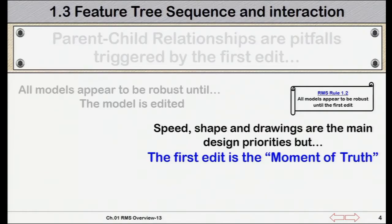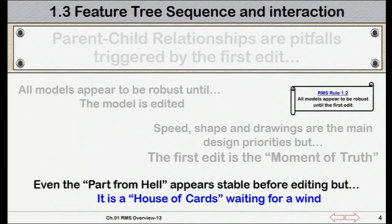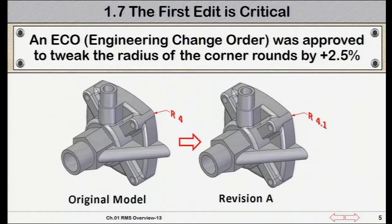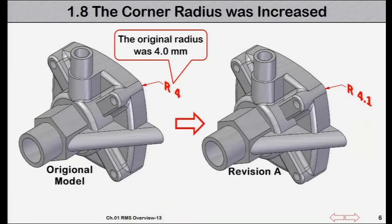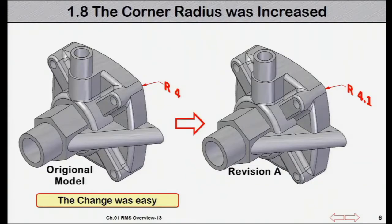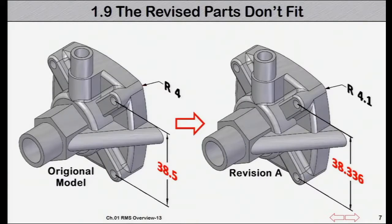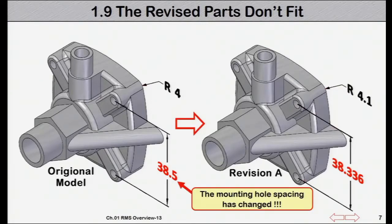How many times has it been faster to make a new model from scratch instead of fixing a tree full of failed features? In the interest of speed, many designers keep working on a model until it looks right and dimensions correctly in a drawing. Every model is robust until someone tries to make an edit. A small change — a corner round from 4mm to 4.1mm — was found easily and changed. The new CAD model was sent to the shop floor and 500 units were made.